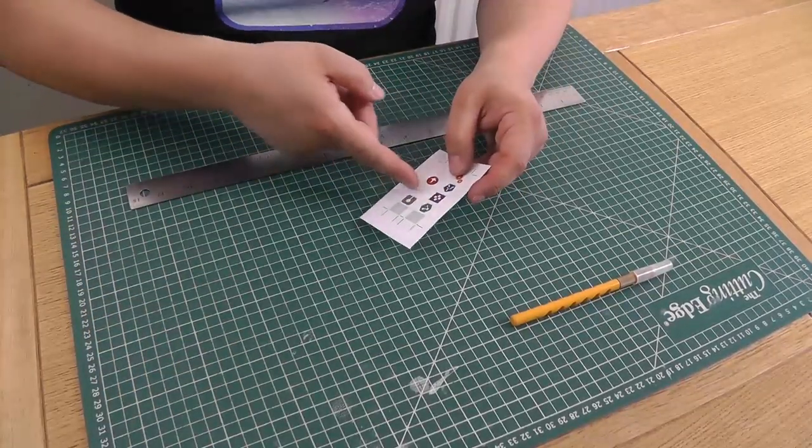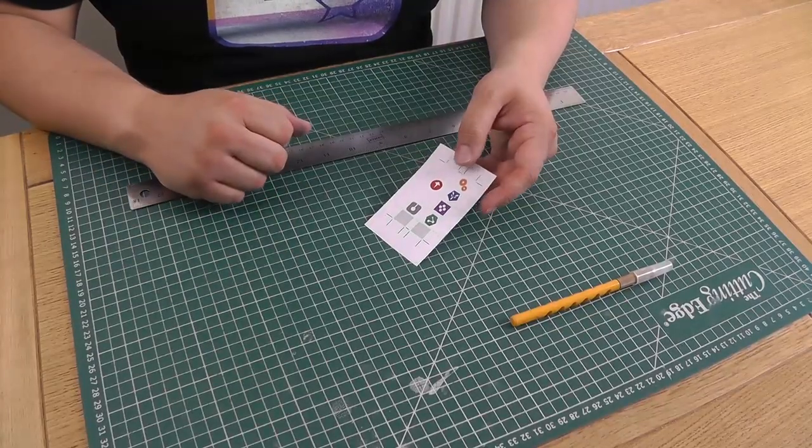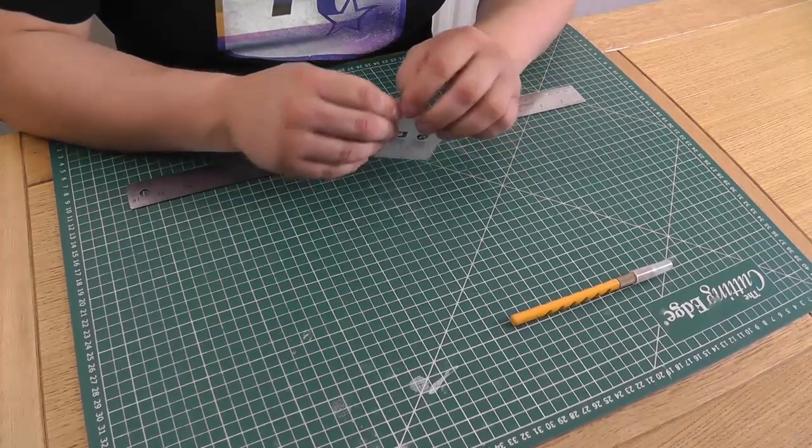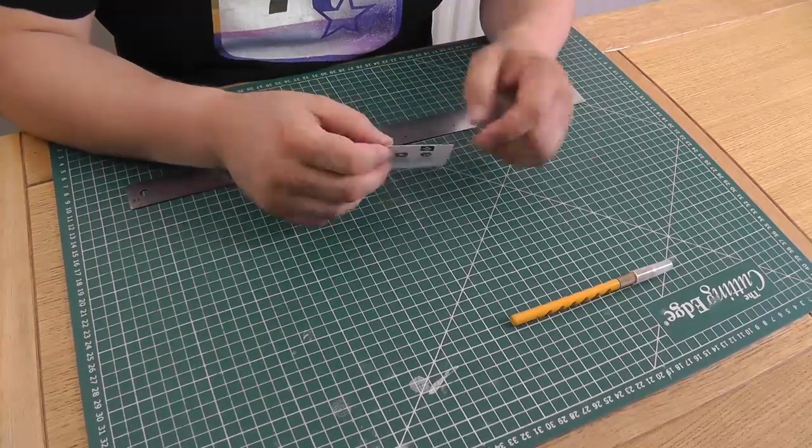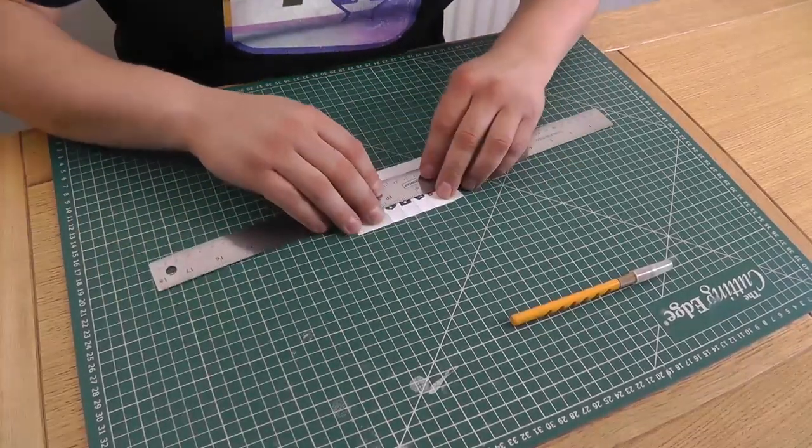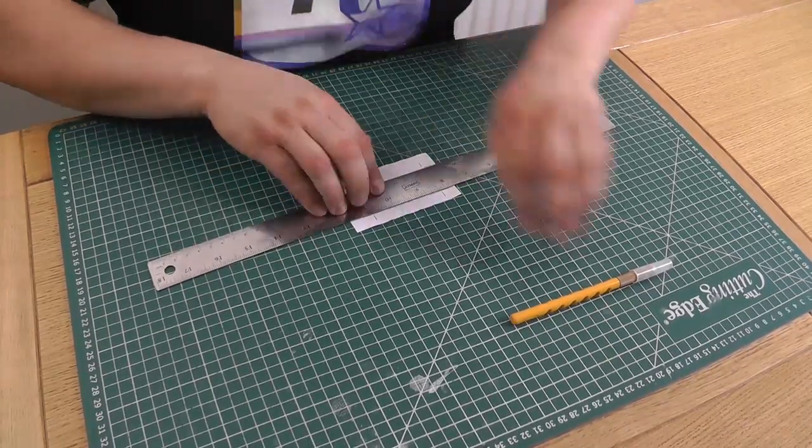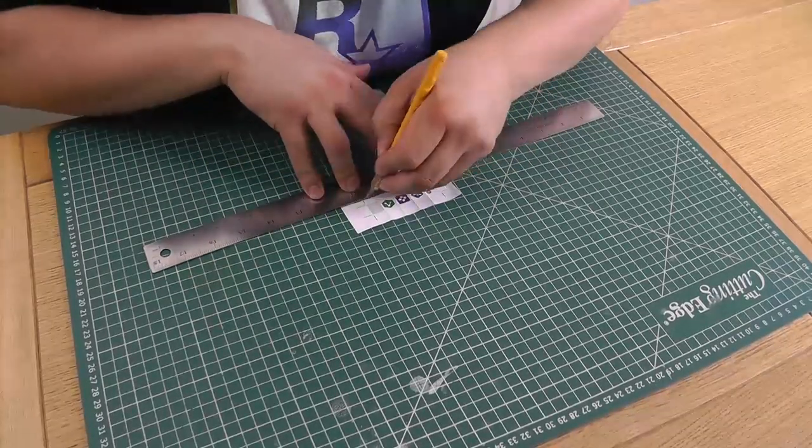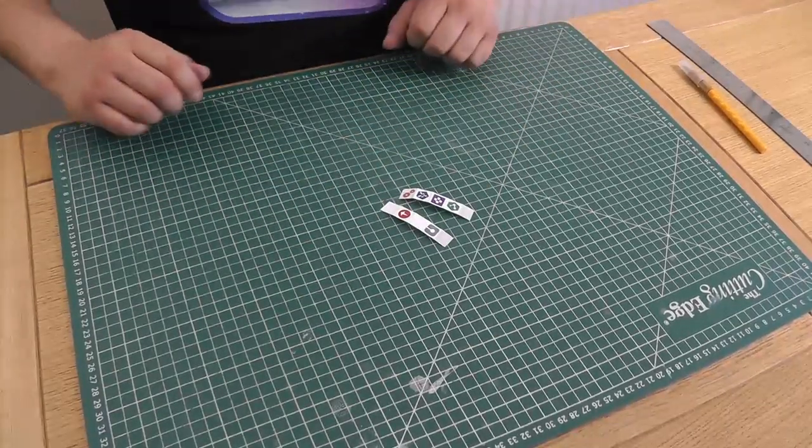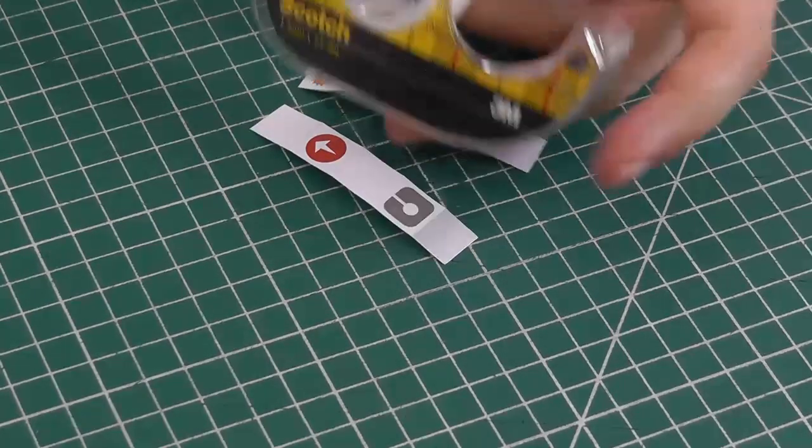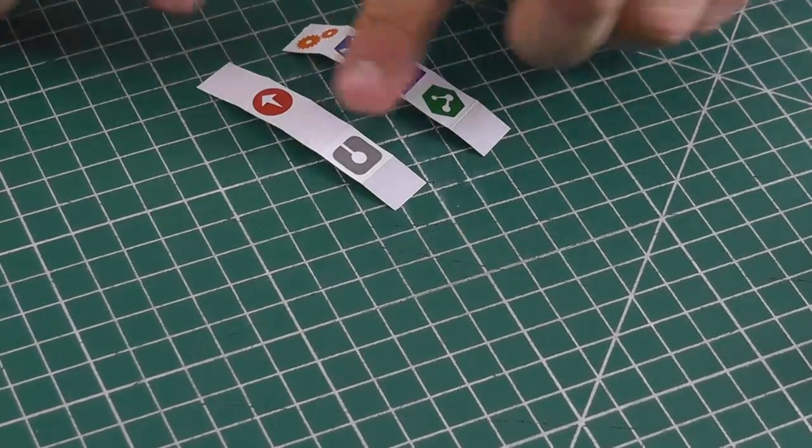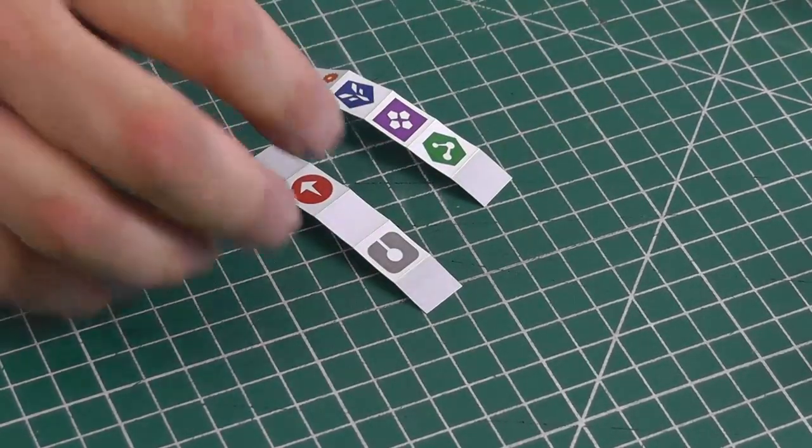You could pre-score all of these lines with a scoring wheel, but to be honest, precision isn't massively important for this method, so I'm just going to fold and score by hand. Now we need to cut out the separate strips. I'm just going to trim along all the crop marks here. Now we need some method of attaching them. I'm just going to use double-sided tape because it's quick and simple.